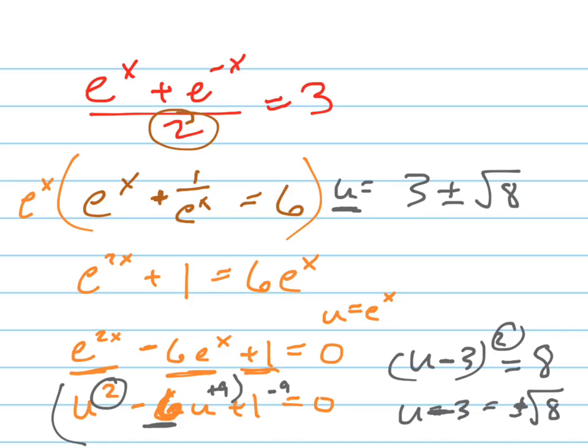But remember, that's e to the x, not x. Okay. So e to the x equals 3 plus or minus the square root of 8, which means x equals the natural log of 3 plus or minus the square root of 8.